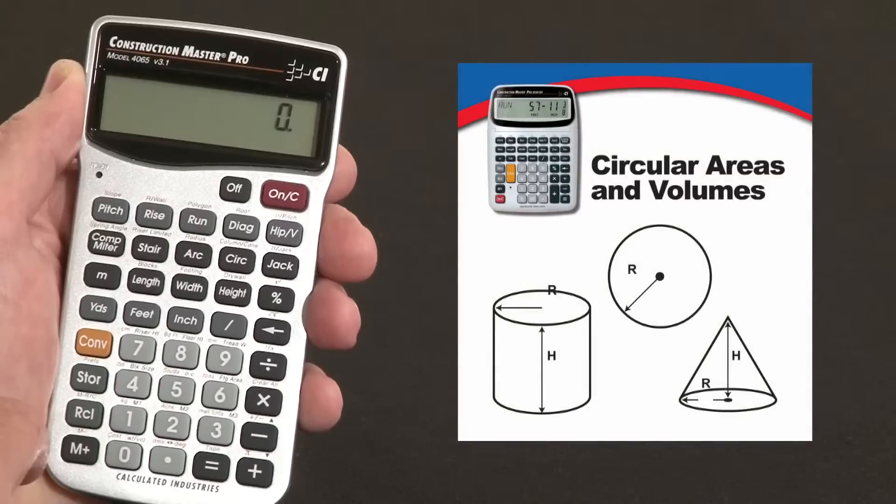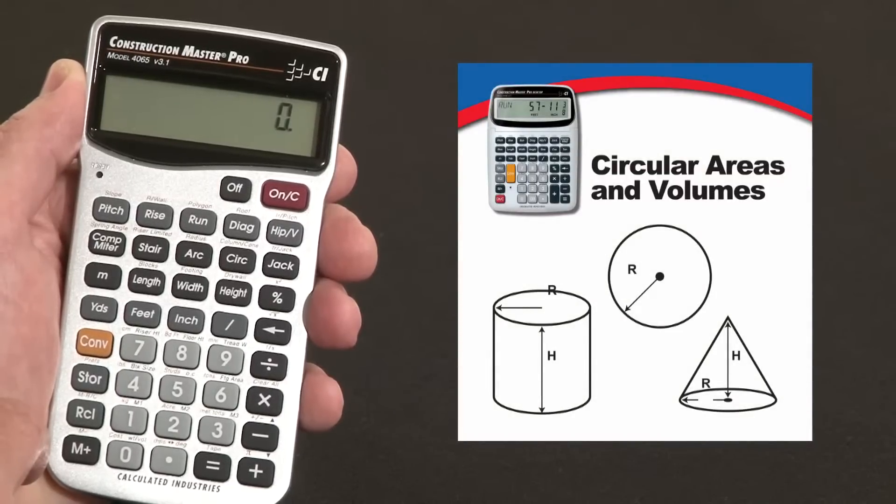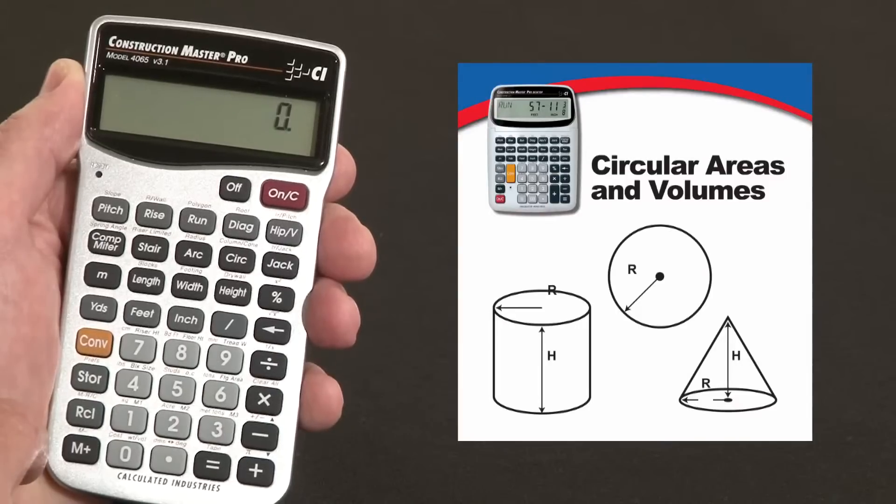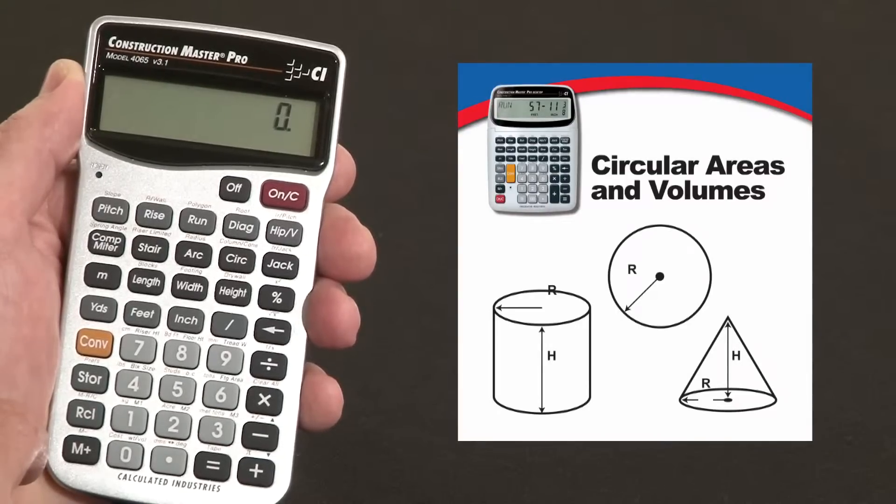Now let me show you how to calculate circular areas, volumes, and arc lengths on the Construction Master Pro. And keep in mind if you're using the trig model or the desktop model, the keystrokes are exactly the same. This feature is great for circles, columns, sonotubes, arched openings, or really anything round.